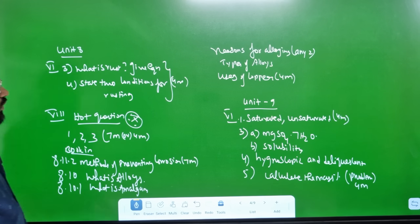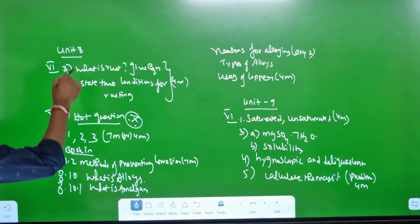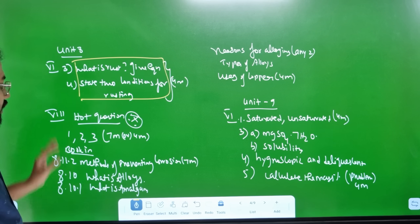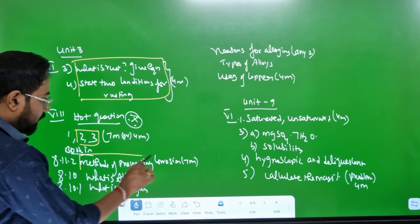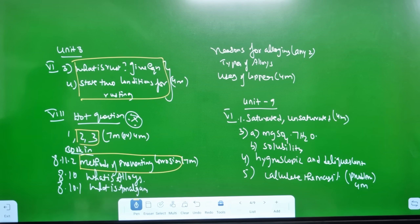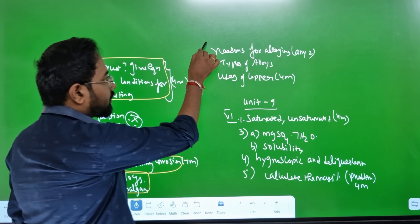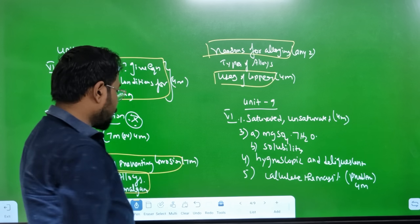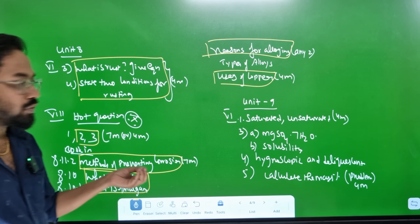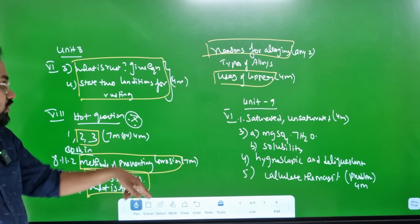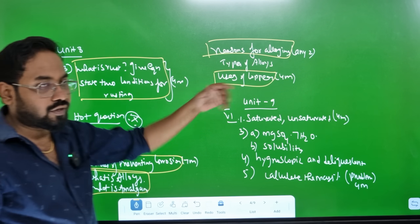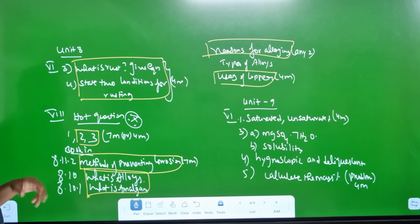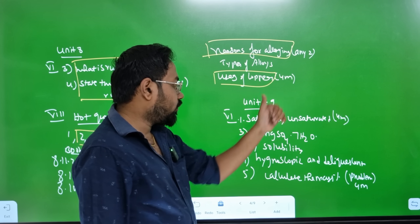So you can read the rest condition. You can read the 2 marks in the 4 mark. The hearts question is 2 or 3. You can read the method of preventing corrosion - 7 marks in the book. You can read what is amalgam, the reason for amalgam, the uses of copper - 4 marks. So you can read 1 or 2 of these hearts questions.